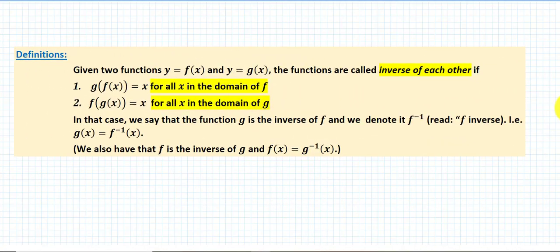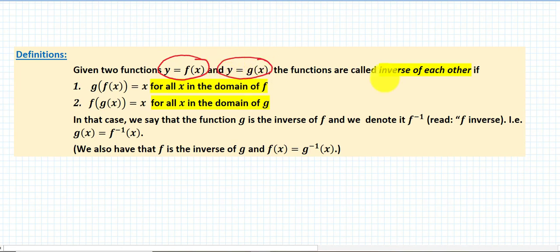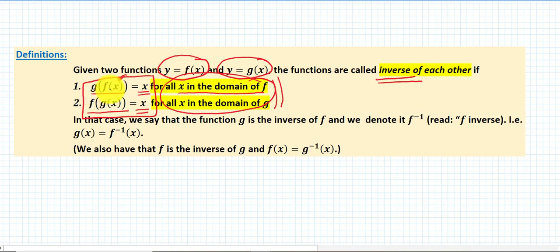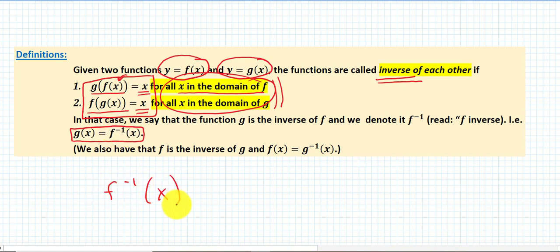Here is the definition of inverse function. Given two functions f(x) and g(x), we say they are inverses of each other if g(f(x)) = x for all x in the domain of f, and f(g(x)) = x. If this holds, then f is the inverse of g. An important notation: if f is the inverse of g, we write g as f⁻¹(x) — read as 'f inverse of x.' This is called the inverse function of f.